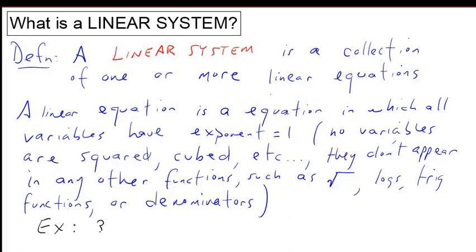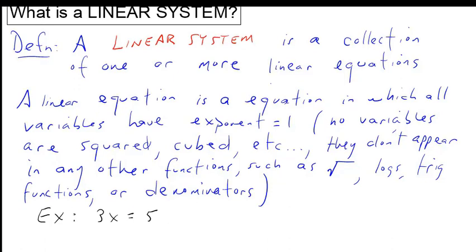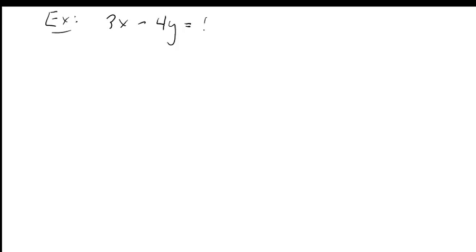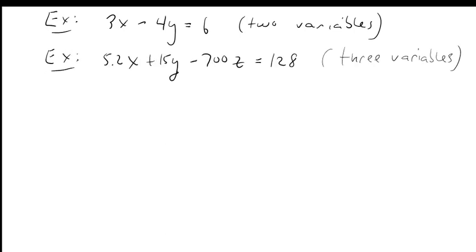Here's an example of a linear equation: just 3x equals 5. The variable x is to the first power and there's no other functional forms in the equation. Here's another example of a linear equation: 3x minus 4y equals 6. This has two variables. And here's a three-variable example.